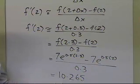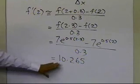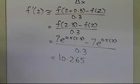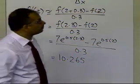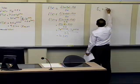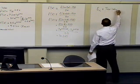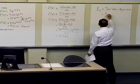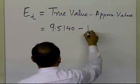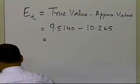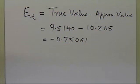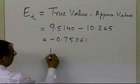Now we can calculate the true error associated with this approximate value — we need both the exact and approximate values. The true error is defined as the true value minus the approximate value: 9.5140 − 10.265, which gives a true error of −0.75061. That's how we calculate true errors — by finding the exact value and subtracting the approximate value from it. And that's the end of this segment.